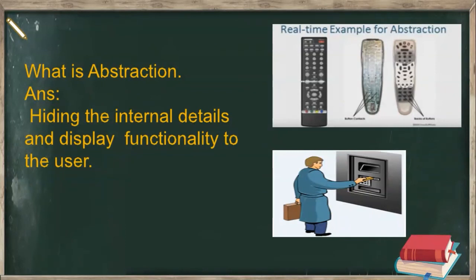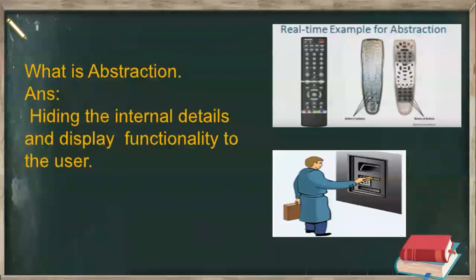Abstraction means hiding the internal details and displaying the functionality to the user. Another example is a car and engine — the engine is inside the car; the user cannot see the engine, but when we run the car the engine starts. Remote, ATM, car engine, and mobile phone are all real-time examples of abstraction. We can implement abstraction using the abstract keyword, which can be applied to both classes and methods.